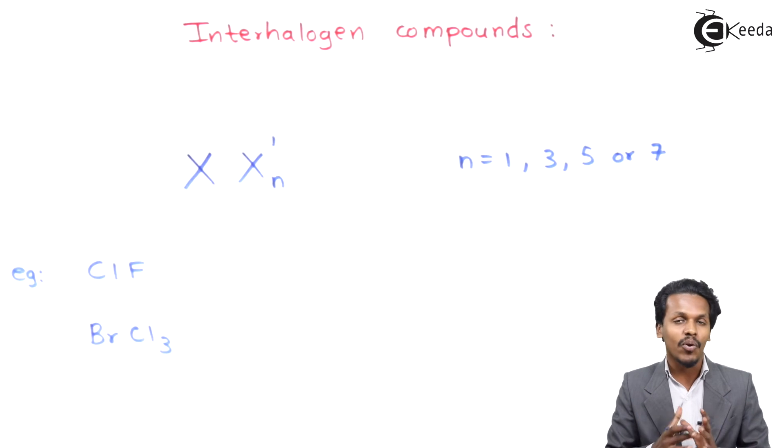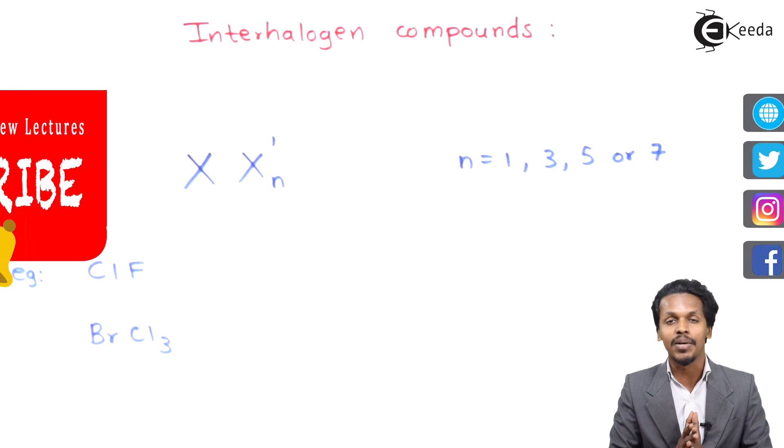Therefore there are various examples we have to talk about. This is what we're going to discuss in my next lecture. But it was very much essential for us to understand what are interhalogen compounds. That was the definition, and with examples we have discussed the interhalogen compounds.